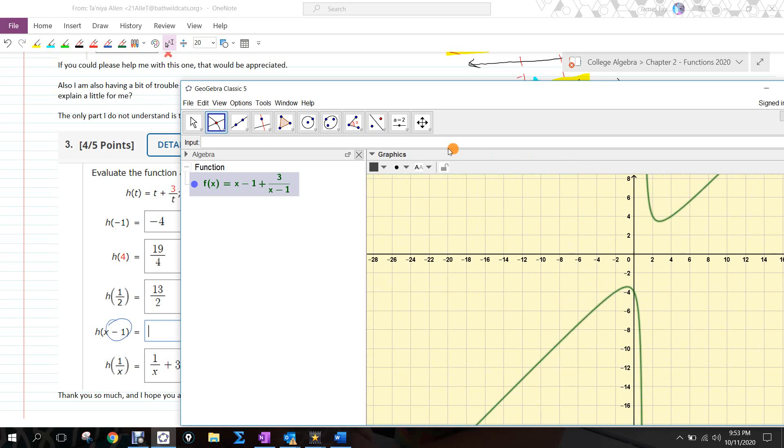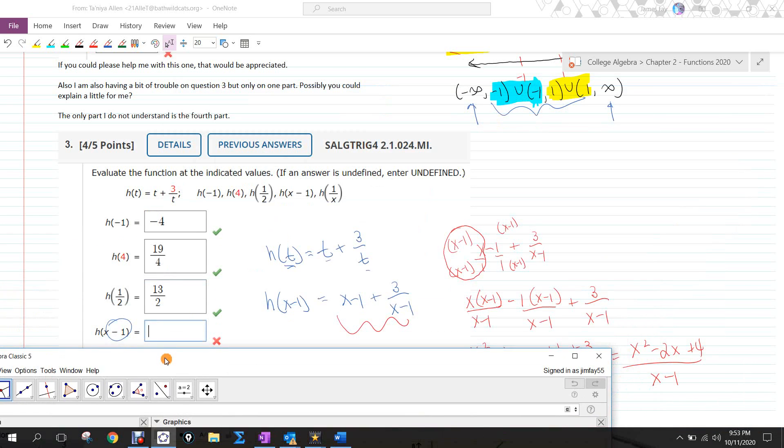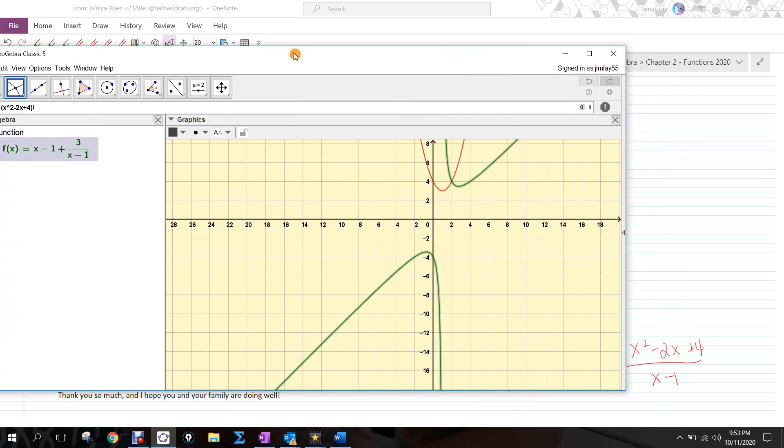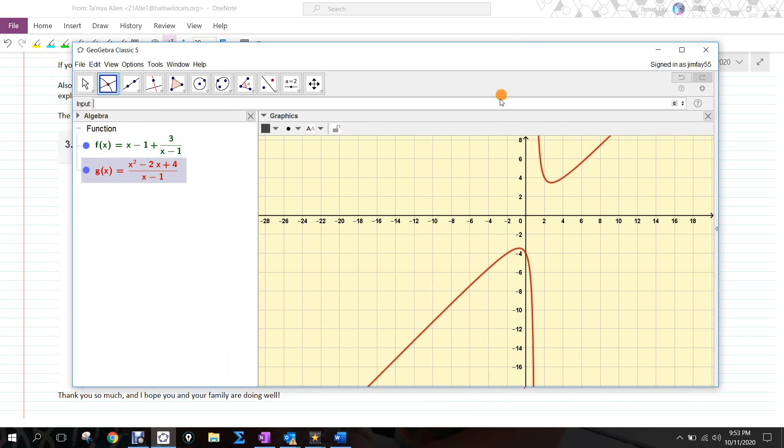And now if I graphed the other version, which is x squared, it's going to be in parentheses up top, x squared minus two x plus four over x minus one. You see that it graphs right on top of the same exact curve. So that tells me that the red and the green are equivalent versions of one another.